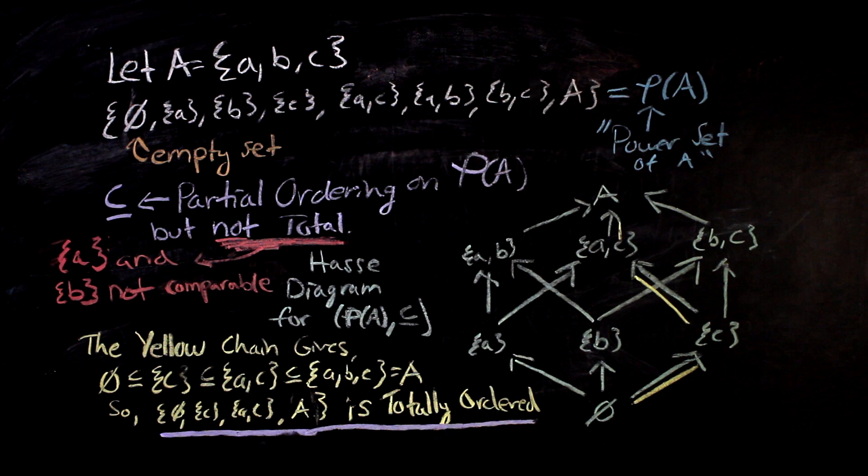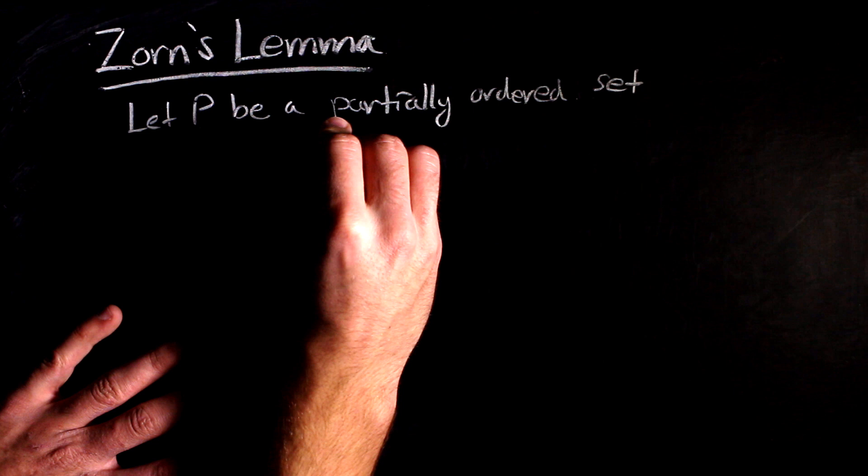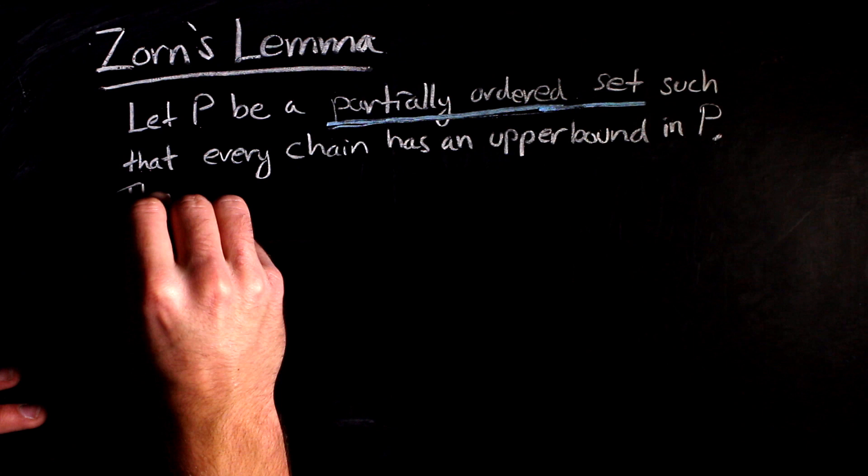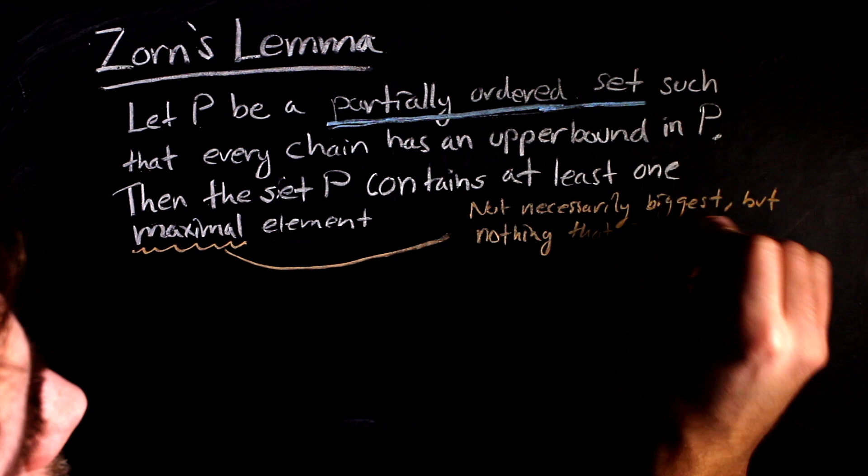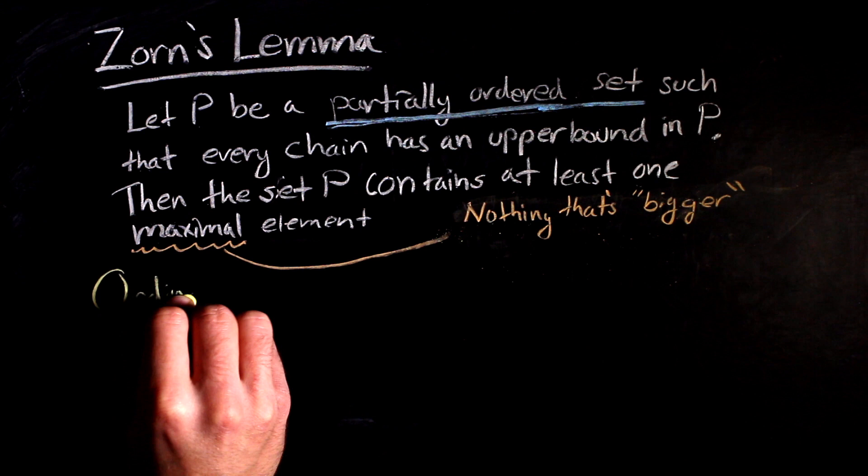Now that we're a bit comfortable with orderings, we can begin to talk about Zorn's lemma, which can be stated as follows. Let P be a partially ordered set, such that every chain in P has an upper bound in P. Then the set P contains at least one maximal element. Here, maximal just means that there's nothing larger in the sense of the ordering imposed on P. Before we continue with the sketch of the proof, there's one tool that is required, the ordinals.